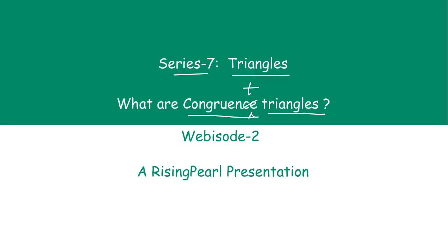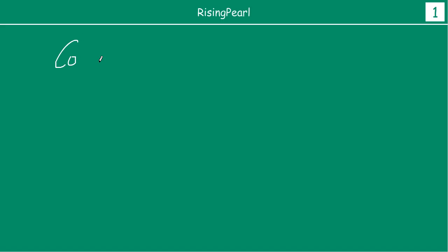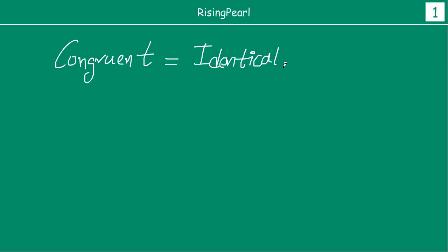What do we mean by congruent triangles? So let's find out. It is a new term that we have introduced called congruent. So let's start — what do we mean when we say congruent? The word congruent means identical. Identical, you can say same, you can say exact, you can say mirror image, etc.